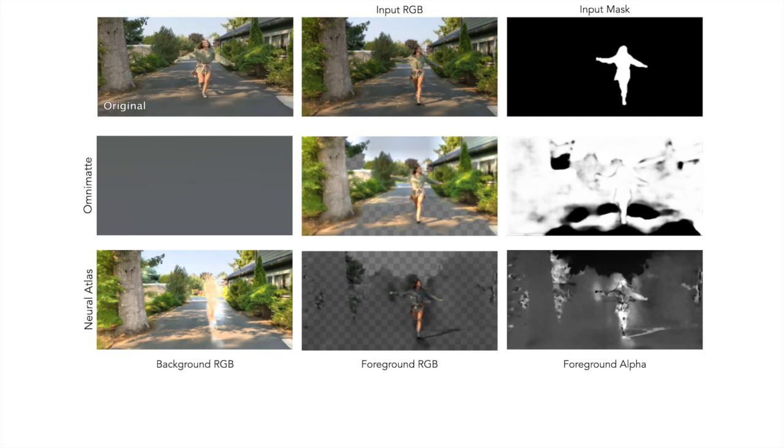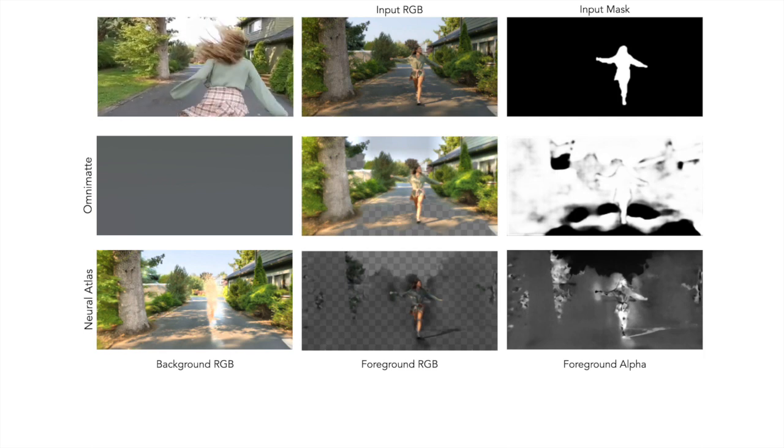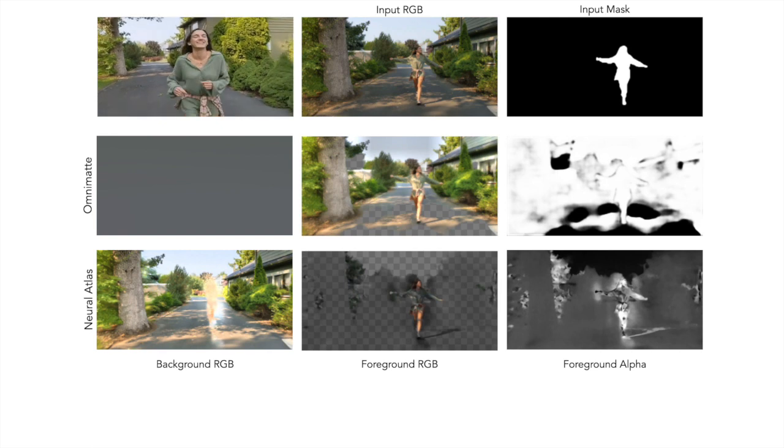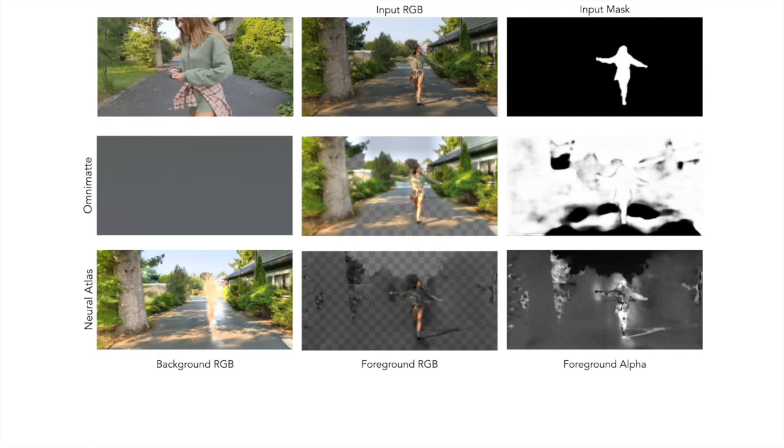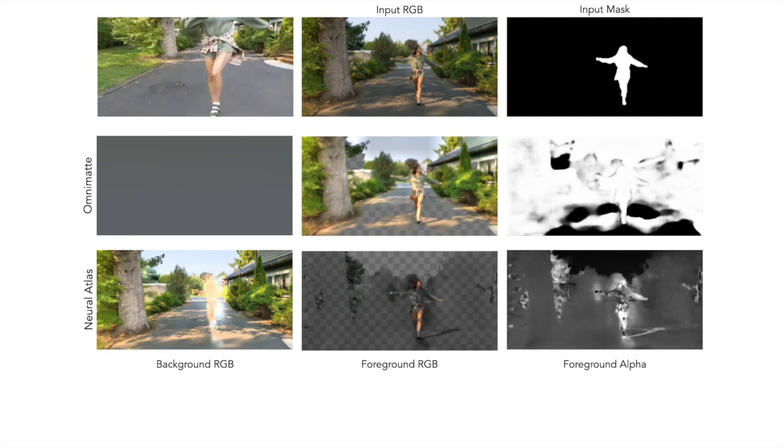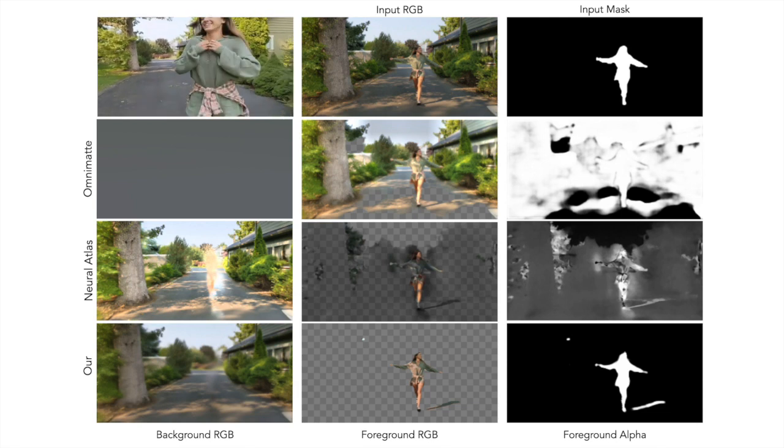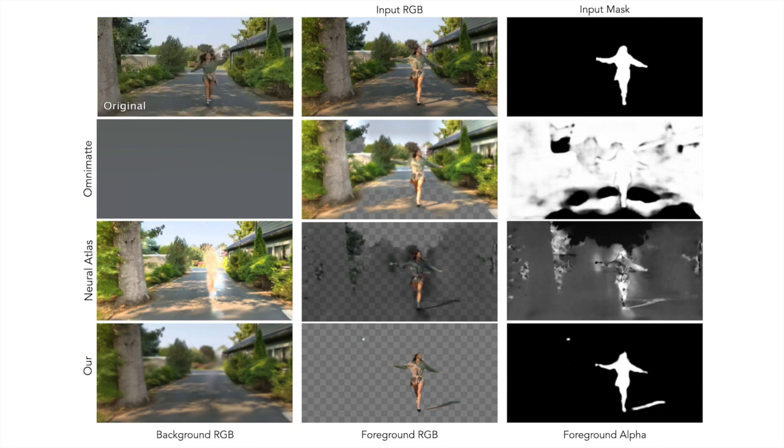Here, we show the output from a frame from the dancing walk video. Due to the type of camera motion, OmniMath and Neural Atlas struggle to produce meaningful layers where OmniMath predicts all the information in the object layer. The method introduced in this paper is able to accurately decompose the layers and capture the shadow in the layer corresponding to the person.